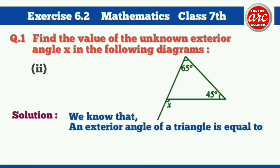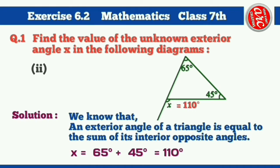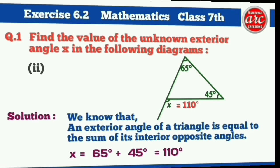Solution of part 2: We know that an exterior angle of a triangle is equal to the sum of its interior opposite angles. Hence, X is equal to 65 degrees plus 45 degrees, which is equal to 110 degrees. So the exterior angle X is equal to 110 degrees.